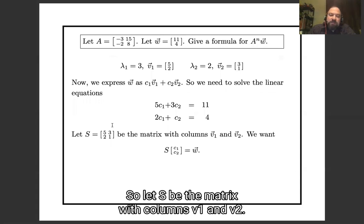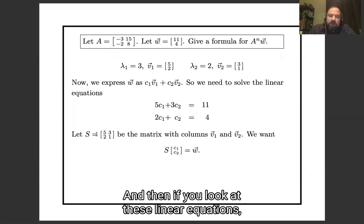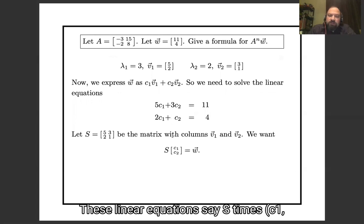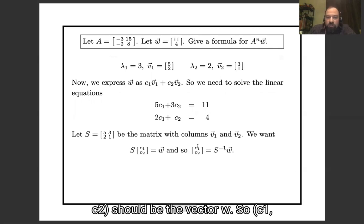So let S be the matrix with columns v₁ and v₂. And then if you look at these linear equations, these linear equations say S times [c₁, c₂] should be the vector w. So [c₁, c₂] should be S⁻¹w.